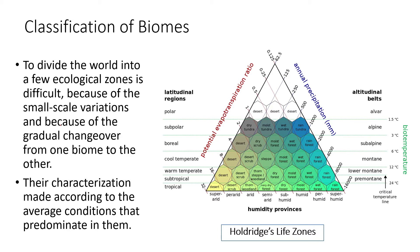Consider rainfall: it varies from area to area. Within India, you will find variation of rainfall even within a 100-kilometer range. Since variation occurs at a very small scale, we have to take average and nominal factors to classify biomes. Several classification rules and strategies have been developed, one of which is the Holdridge Life Zones.